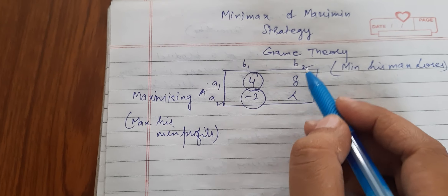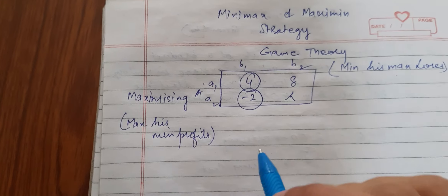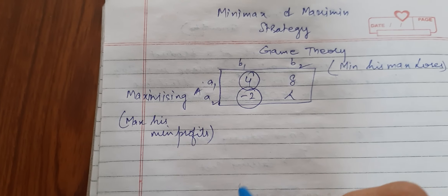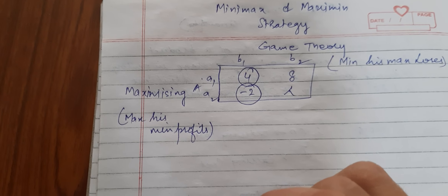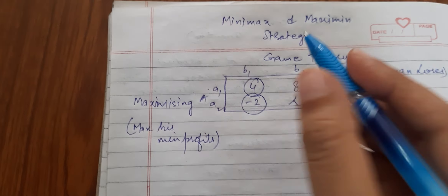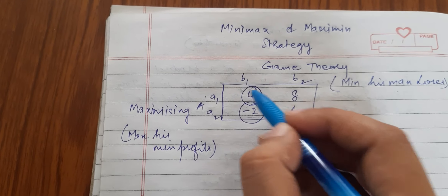Column-wise, we look at what my maximum loss is, and then try to minimize it. So we put a square around that value.